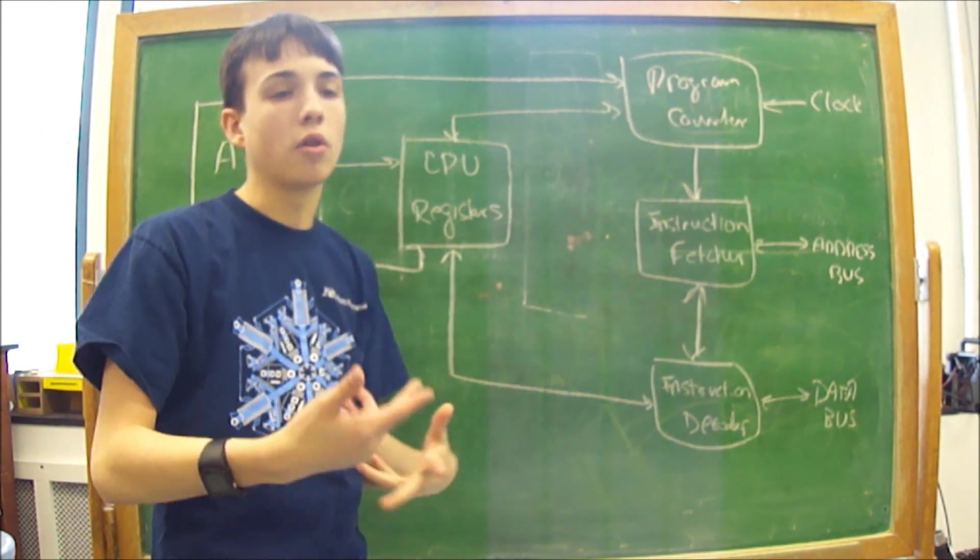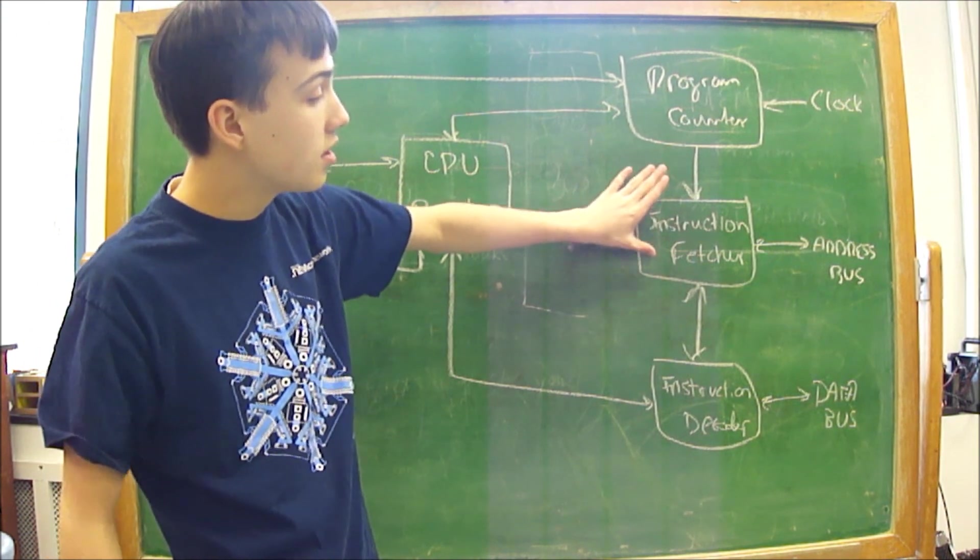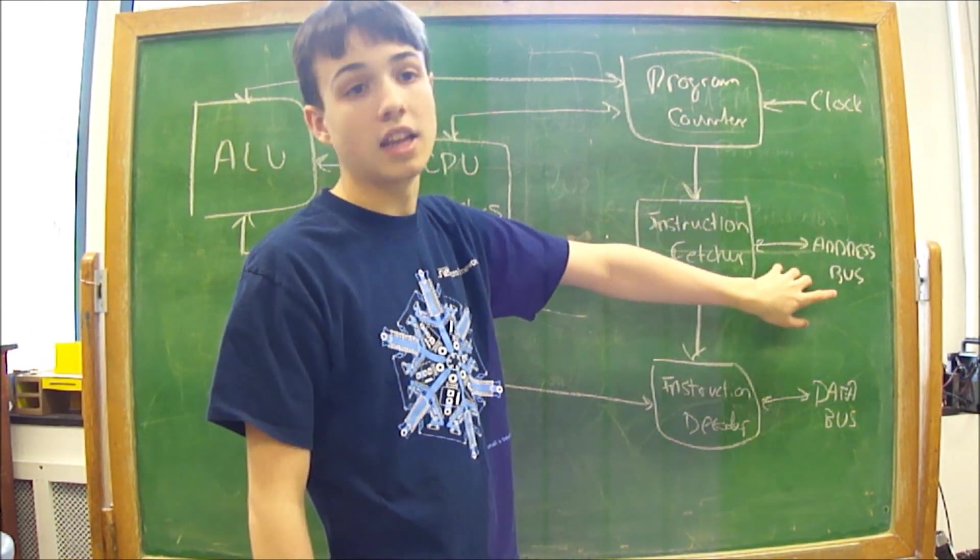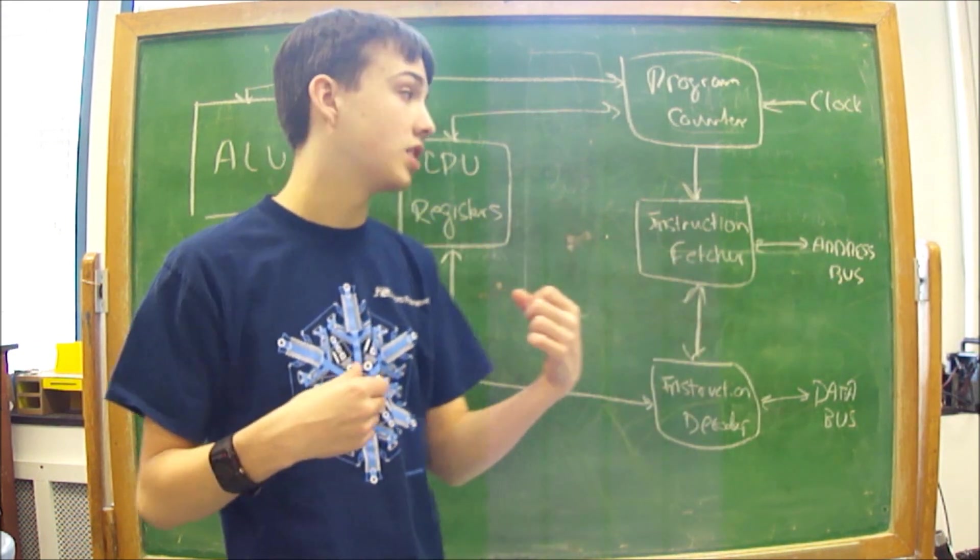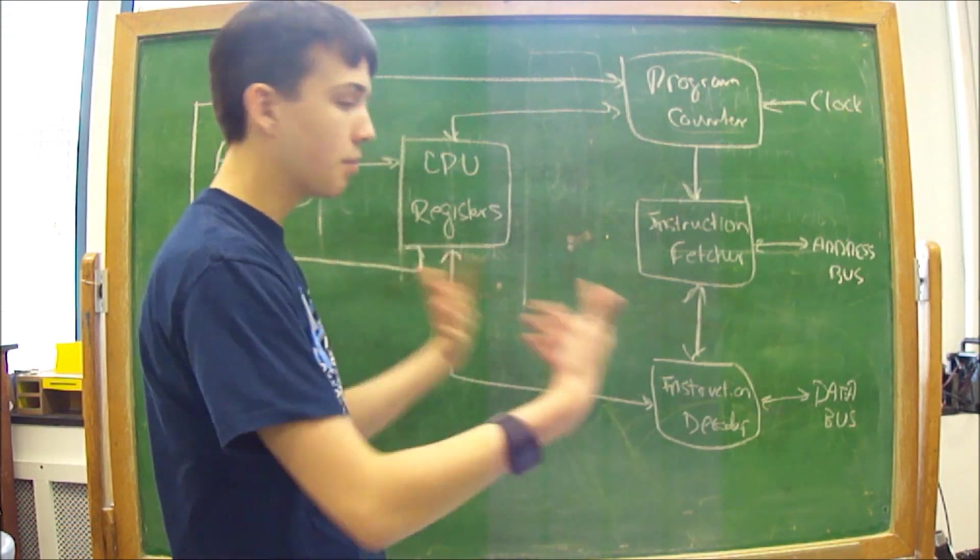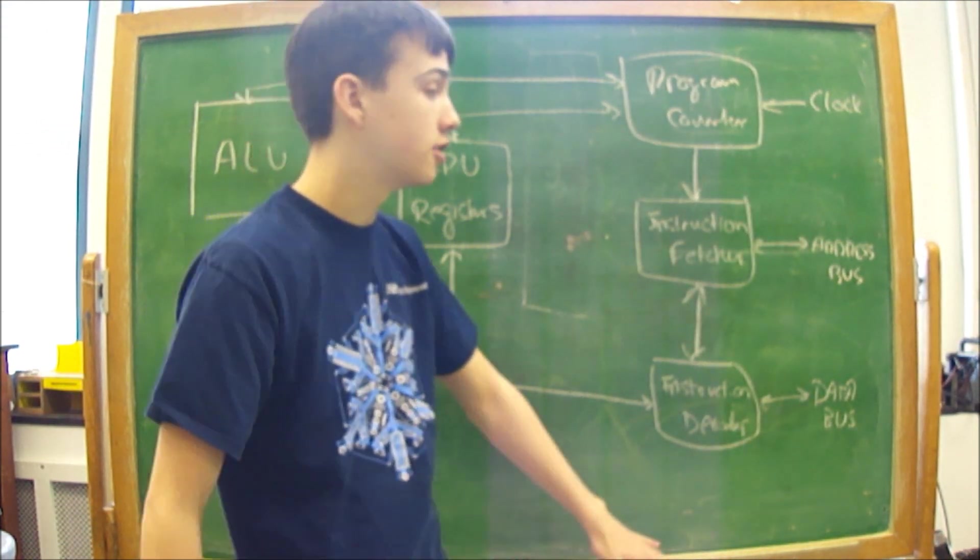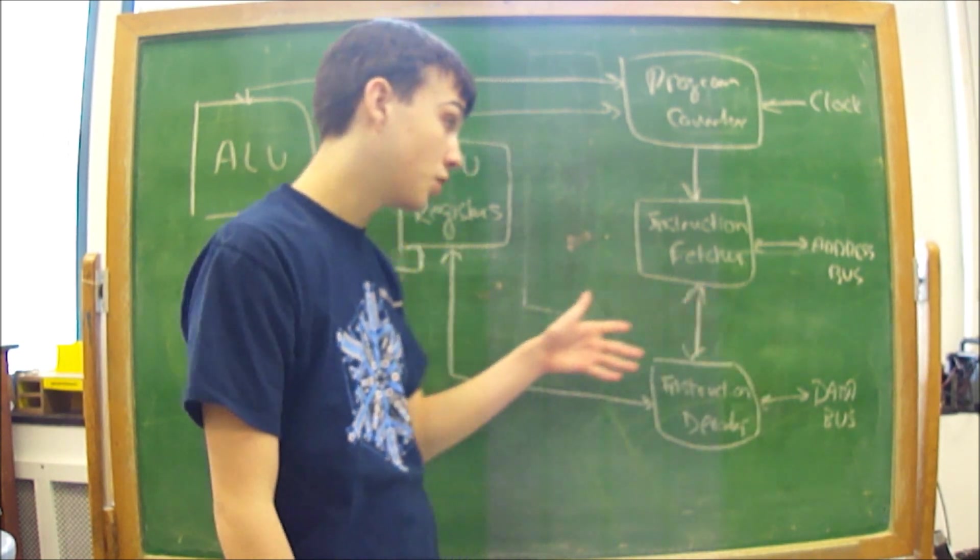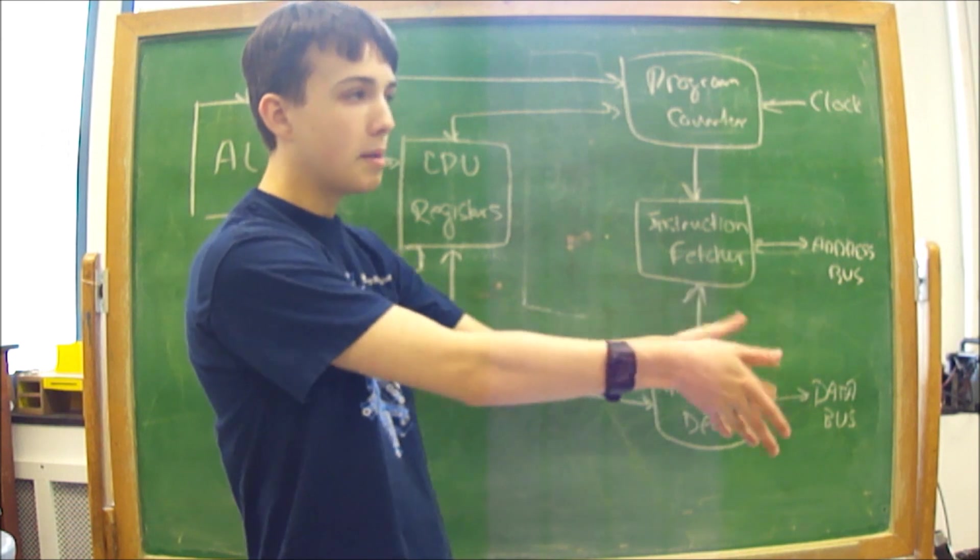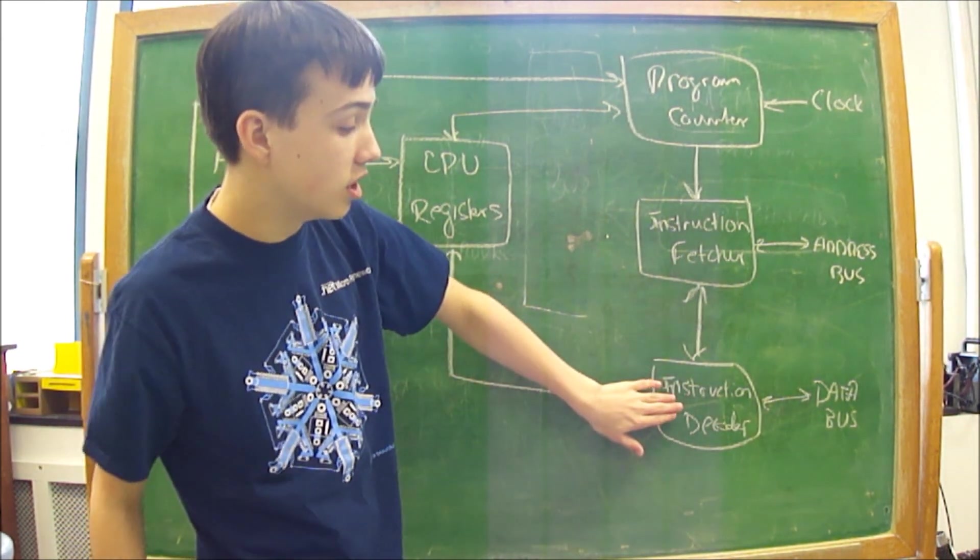It's to count how far along in the program it is, which then sends where it is to the instruction fetcher, which puts an address onto the address bus, which then goes out to your IO bus and gets something back. So normally, without an IO bus, this would just be connected to your memory unit. And this would go out, get, it would send an address to the memory unit, which would then send back data to the instruction decoder.